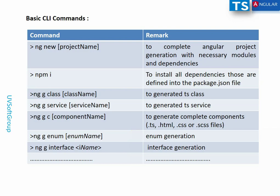You can add new dependencies to package.json and run `npm i` again to install them. You can also build TypeScript files using Angular CLI generators: `ng g class [ClassName]`, `ng g service [ServiceName]`, `ng g component [ComponentName]` — which auto-creates TypeScript, HTML, and CSS or SCSS files. You can also generate enums and interfaces.